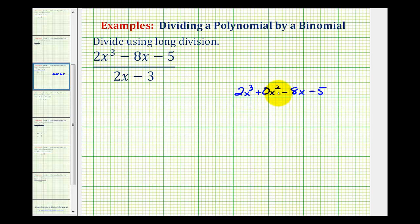Notice how the terms are in descending order, and for the missing term, we put in a zero term, and that's so things will line up nicely. I'm going to divide this by 2x minus 3.